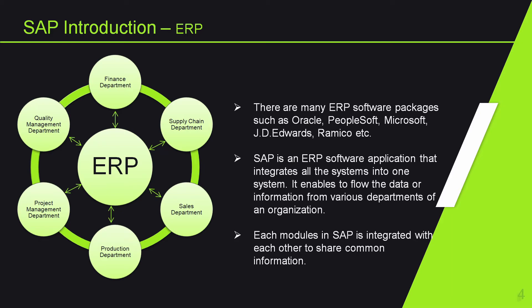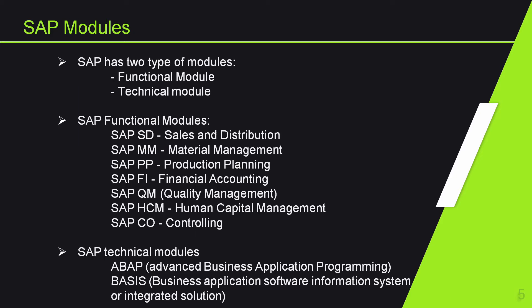SAP has two types of modules: one is functional and the other one is technical. There are more than 25 functional modules. However, we will be discussing the most common functional modules here. The most common technical modules are ABAP and BASIS.